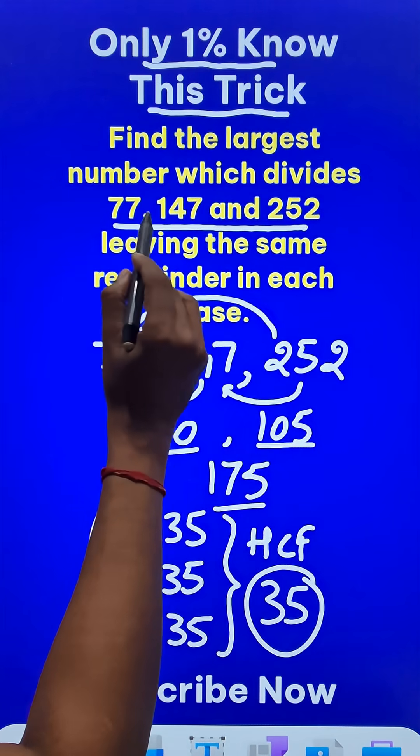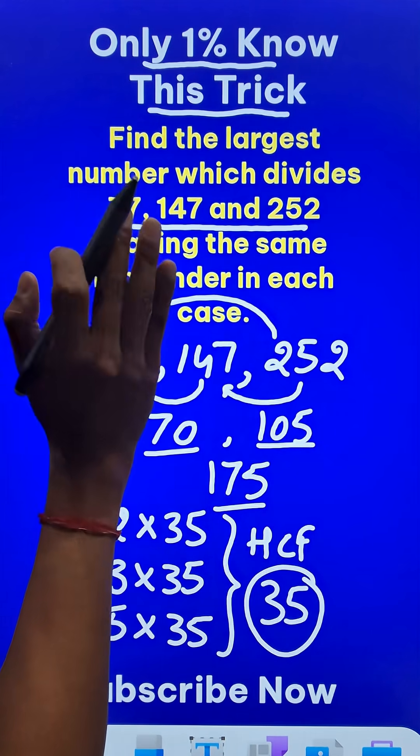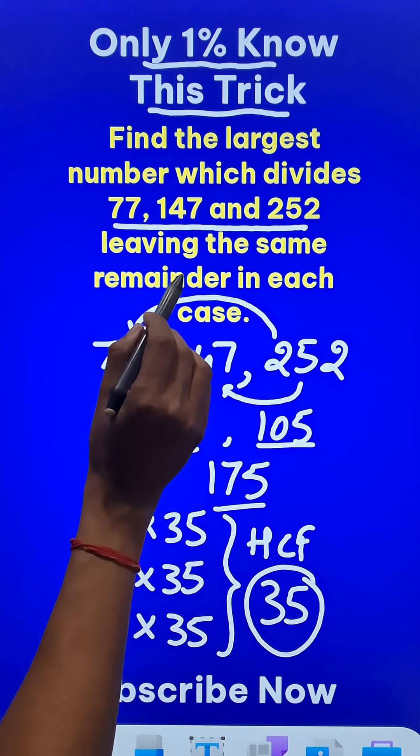35 is the largest number which divides these three numbers and it will leave the same remainder, that is 7 in each case.